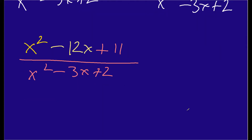Now that we've combined like terms, we now need to factor things. Because as we factor the different values, we might be able to cross off or eliminate like pairs through simplification. So I'm going to start with the top value — the numerator.